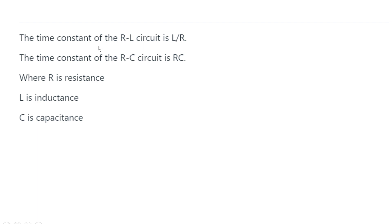The next topic: time constant. Values of R, L, and C will be given and you may be asked to find the time constant of RL or RC circuits. For an RL circuit, use the formula τ = L/R. For an RC circuit, use the formula τ = RC. These are the formulas to calculate the time constant for RL and RC circuits.